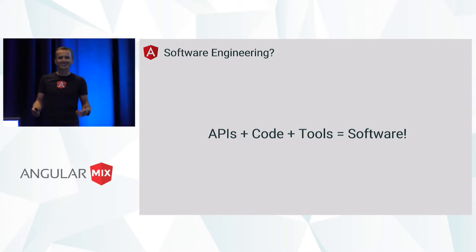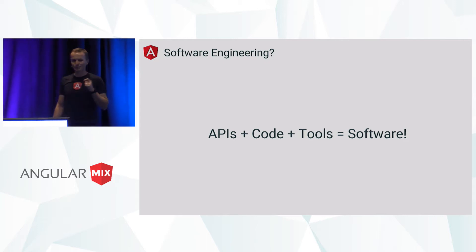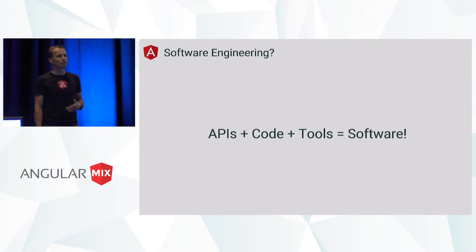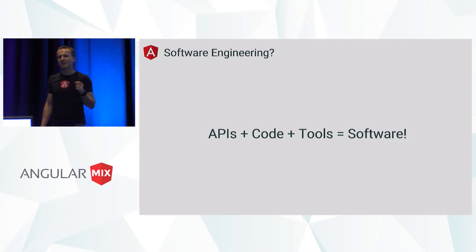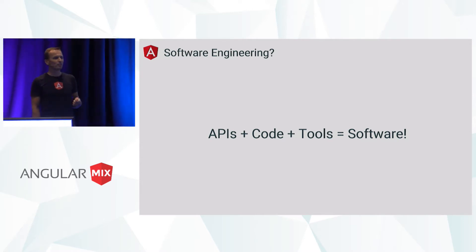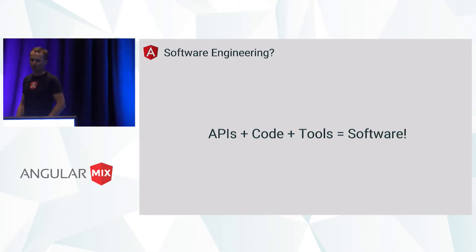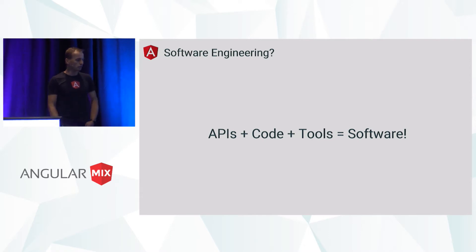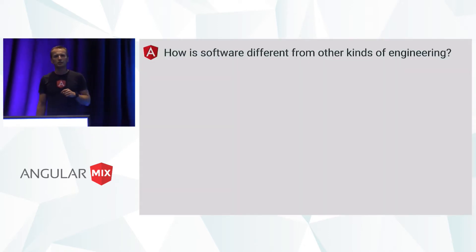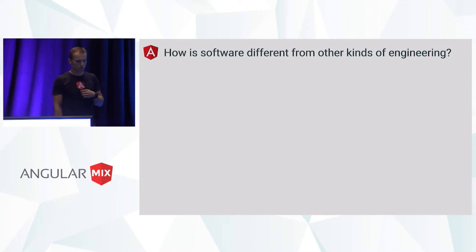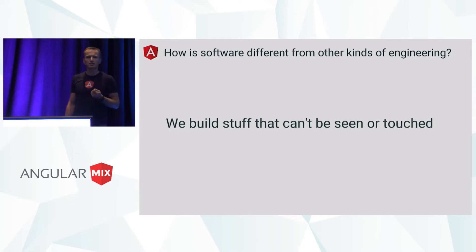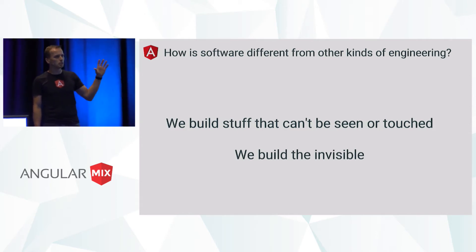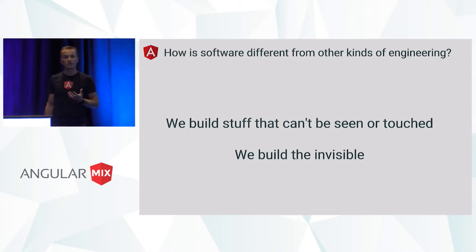Sometimes it works really well, sometimes it doesn't work so well. And especially when we compare this approach to other engineering disciplines like material engineering, electrical engineering, or civil engineering, we find that approaches in these other disciplines are much more rigorous. But when contrasting software engineering with other disciplines, I realized there is one thing that makes software engineering very different: the thing we build can't be seen or touched. Basically, what we are building is the invisible. Yes, there are some user interfaces, but that's really just the tip of the iceberg. There's a lot of code that powers the user interfaces that we can't see.